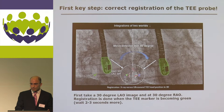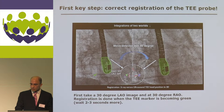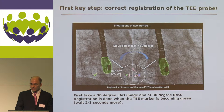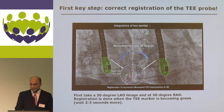The first step when using this technology is to perform correct registration of the TEE probe. This is very easy — you take two orthogonal views and the system will localize and track the TEE probe, which will appear as a green spot on the TEE marker. You need two orthogonal views with at least a 60-degree difference.